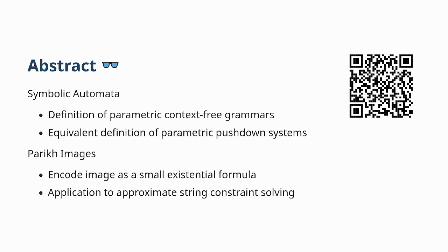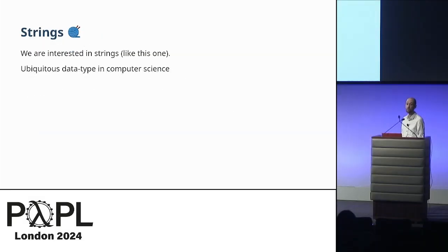Let's go on to the talk. The talk in abstract is about a kind of symbolic automata. One of the contributions is we look at the idea of parametric context-free grammars and an equivalent definition of pushdown systems. That's like a symbolic version of a well-known theory. Then we go on to look at the Parikh images of these things. In particular, we show that the Parikh image of a symbolic context-free grammar can be encoded as a small existential formula. So the great thing about this is we can actually use it for our favorite SMT-based verification techniques.